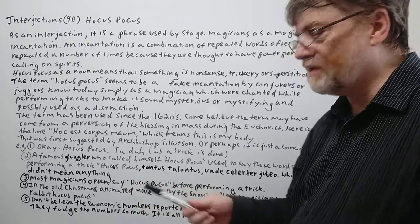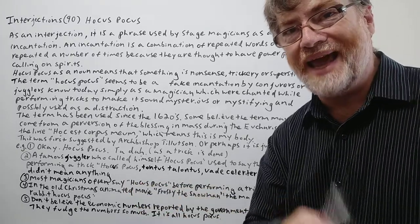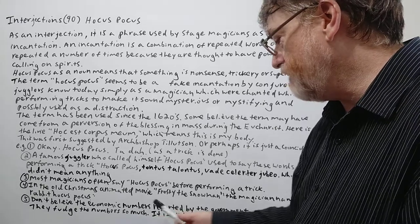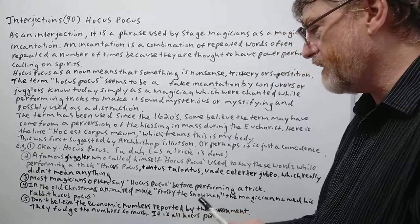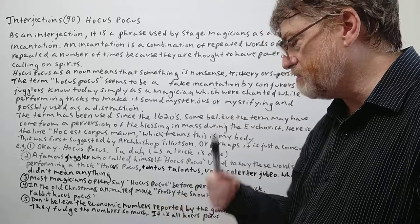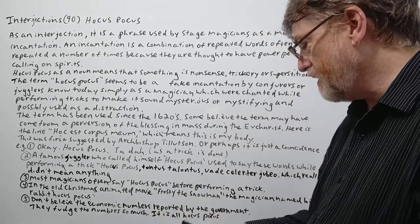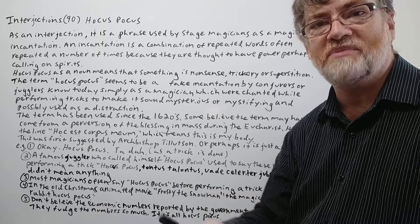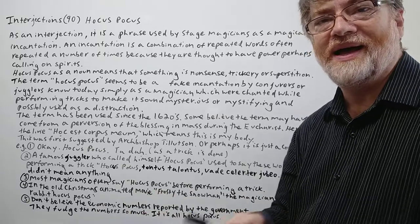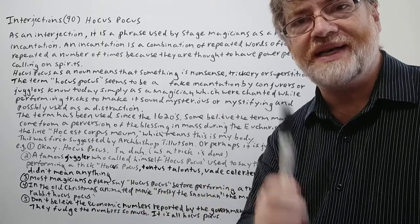And the last one is really just to show how sometimes we use hocus pocus as a noun. Don't believe the economic numbers reported by the government. They fudge the numbers, means they change them around so much. This is all hocus pocus. It's like they're playing a trick on the people. That's the way we would hear it used as a noun.